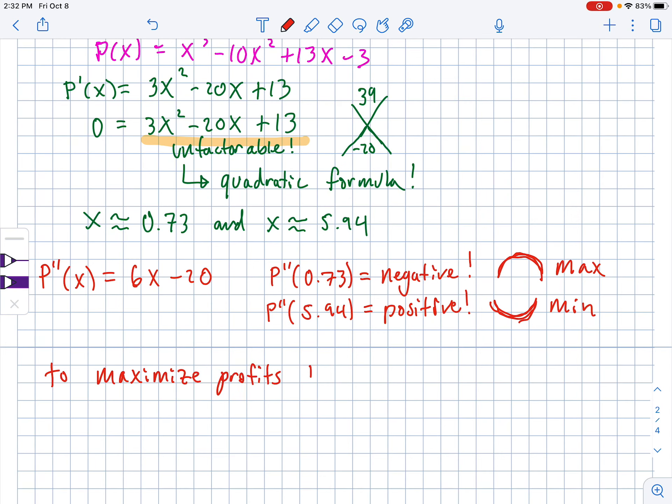So to maximize profits, they should make, it's 0.73 times 1000 because this X was always in terms of thousands of fishing poles. So when you do that, I believe this is 730 poles. To minimize profits, not sure why we would want to do that, but it is true that if you want to make the least profits possible, they should make 5.94 times 1000. So 5,940 poles.